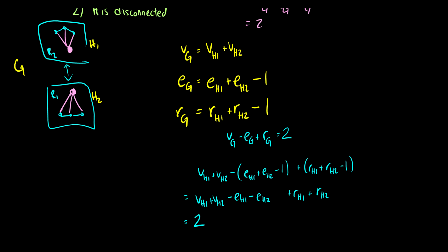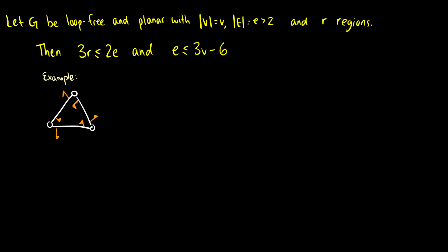So we've just proven that this works in two circumstances. I highly suggest just remembering the pictures, and if you can derive it from there, you're probably a lot better off. With this, we can derive some other interesting properties about loop-free planar graphs, which will help you figure out if a graph is planar or not.